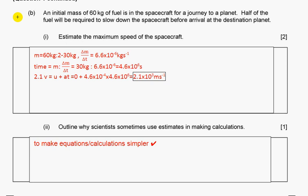Sixty kilograms of fuel is in the spacecraft for a journey to a planet. Half of the fuel will be required to slow down the spacecraft. Estimate the maximum speed. Half will be spent means 30 kilograms of fuel will be spent. To know how much time it will take, divide mass by rate of flow of mass and we get so many seconds.